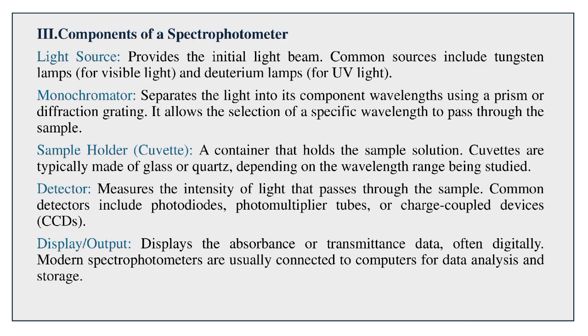Components of a Spectrophotometer — Light Source. Provides the initial light beam. Common sources include tungsten lamps for visible light, and deuterium lamps for UV light.